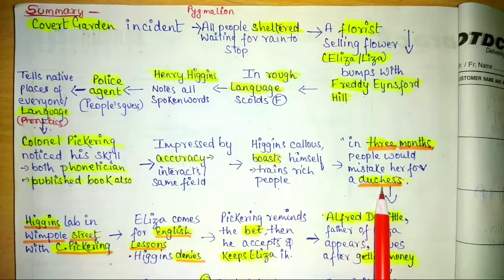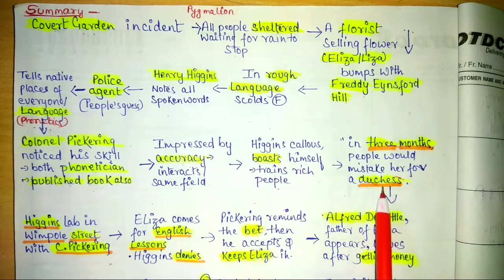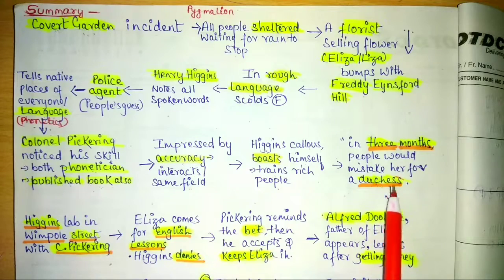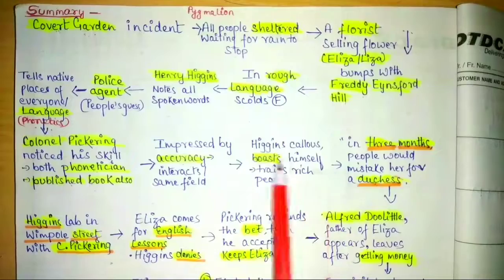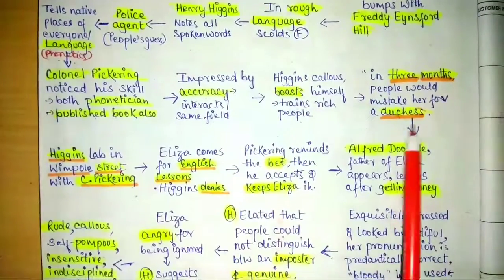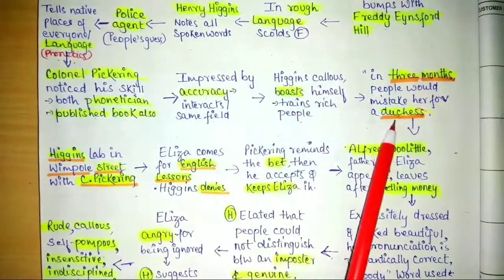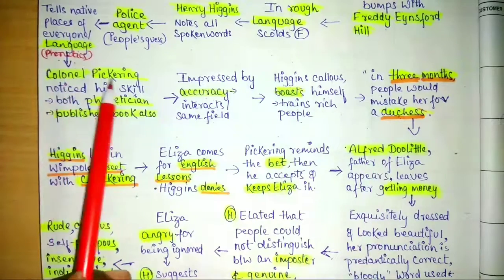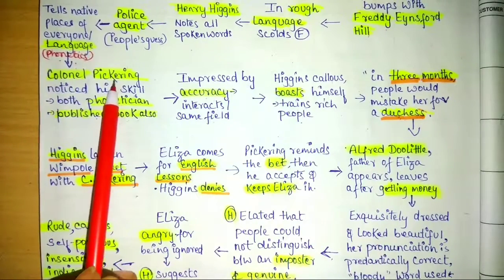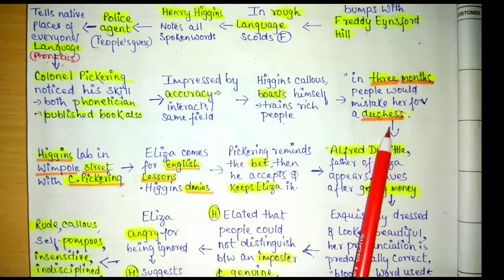Higgins says he is able to change this girl into a duchess — a high-class lady, even a princess — within three months. People will make mistakes recognizing her; she will be trained in such a manner that she will lose her earlier identity. Pickering bets with him, saying that if he is able to change this girl, Pickering — a very rich man — will sponsor a phonetic experiment.